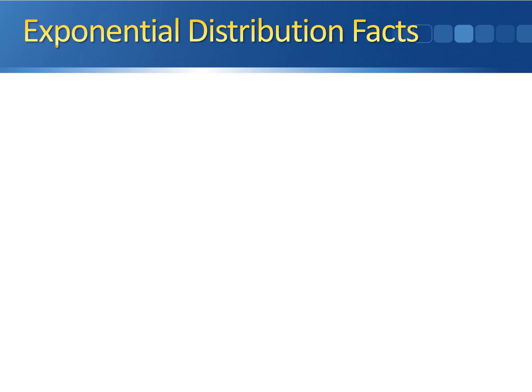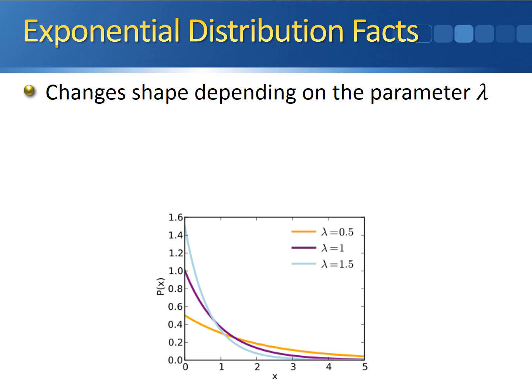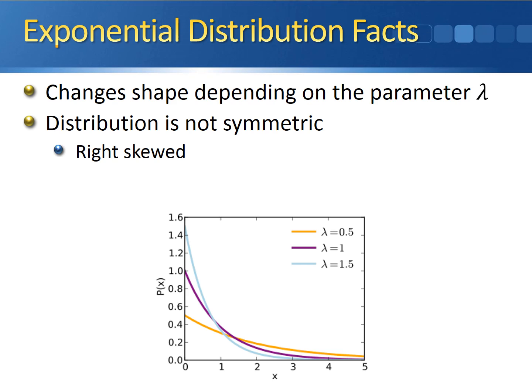Looking at the picture, the exponential distribution changes shape depending on lambda — as you increase lambda, the peak gets higher. The distribution is not symmetric; it peaks at zero and steadily declines as x increases, making it right skewed. The sample space goes from zero to positive infinity, because time between arrivals can never be negative, and you could potentially wait forever before the next arrival.